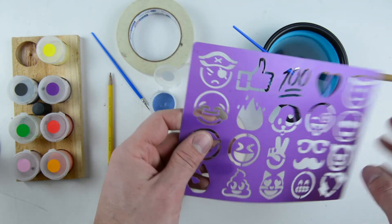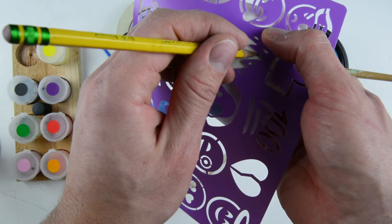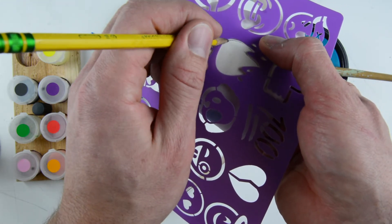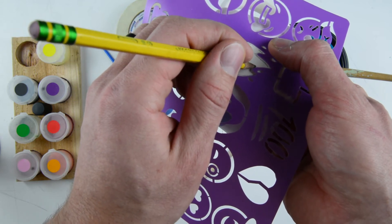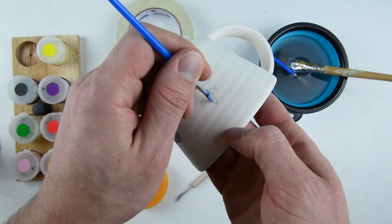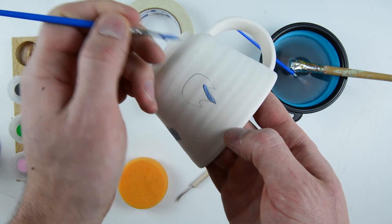The stencils are such a fun way to get some cool designs on there really quickly. I typically like curving the stencil along the mug and then I use a pencil to trace out whatever design I want. After I have that design, I can then paint inside my lines carefully to create whatever design I've chosen.